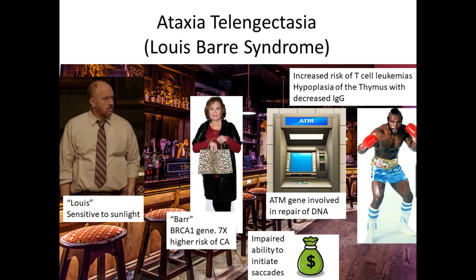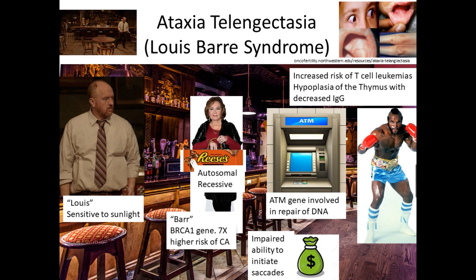As the name implies, by age two these patients develop ataxia followed by dysarthria and dystonia; they are severely physically disabled. One of the earliest signs that can be presented in your clinic is an impaired ability to initiate saccades — an ataxic movement of the eye, remembered by a sack of money under the ATM. These are clinical pictures of telangiectatic vessels seen in the eyes, mouth, and ears with Louis-Bar syndrome.